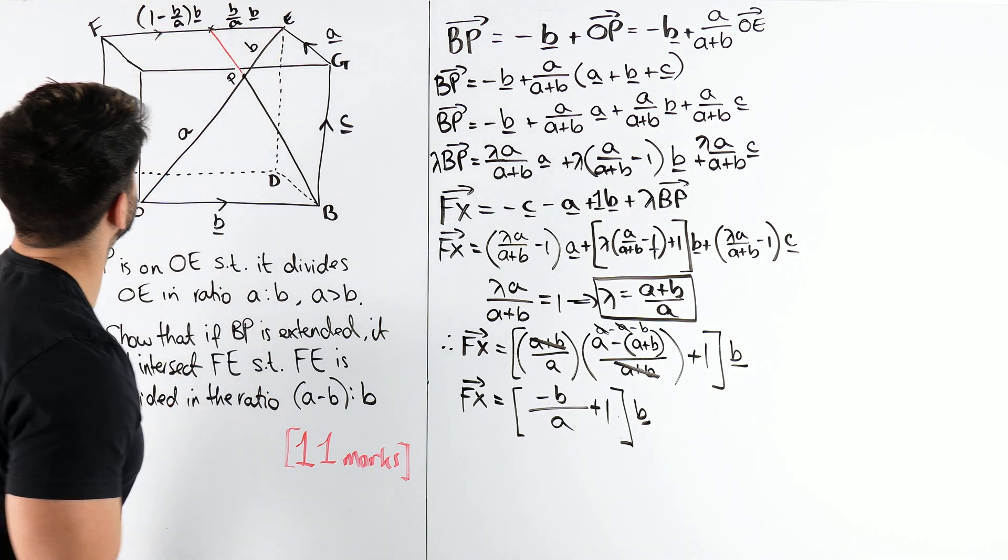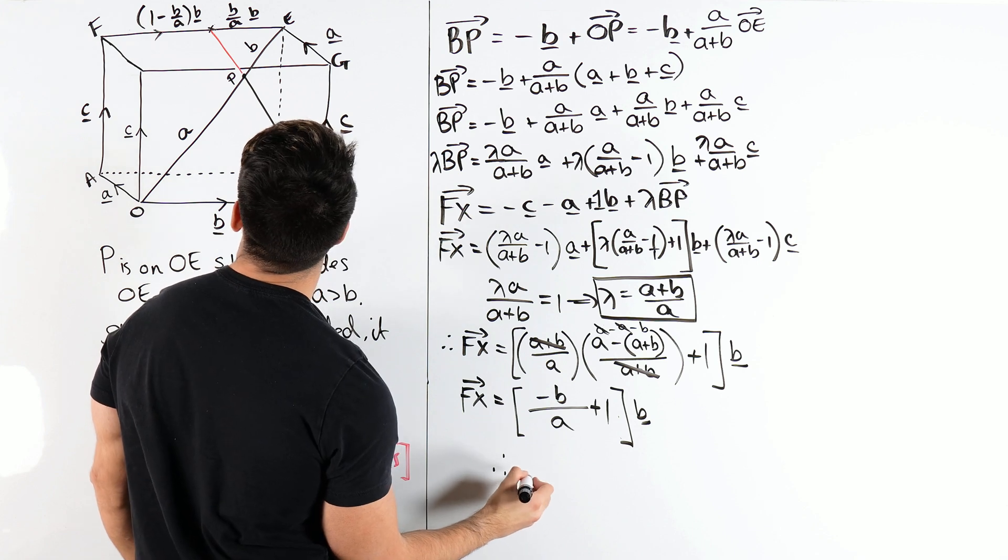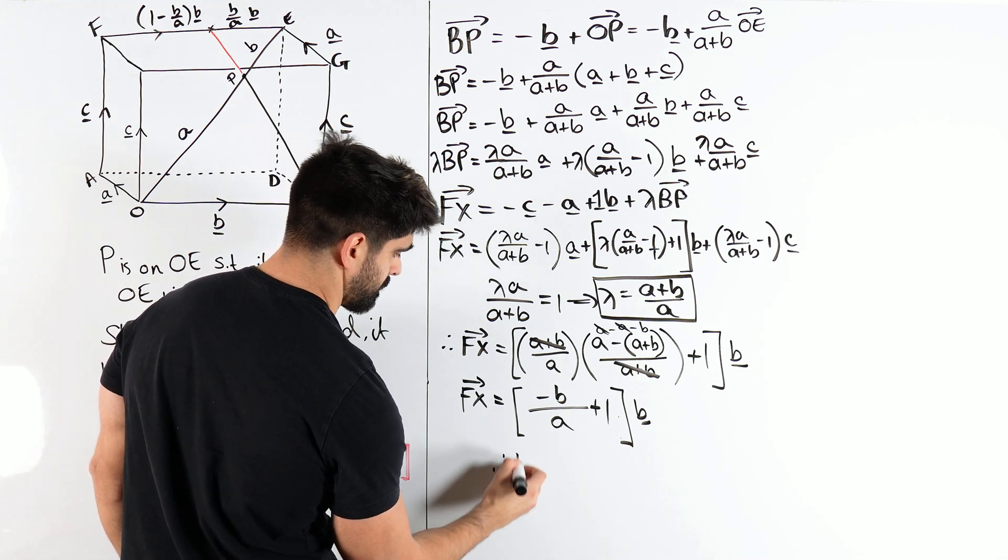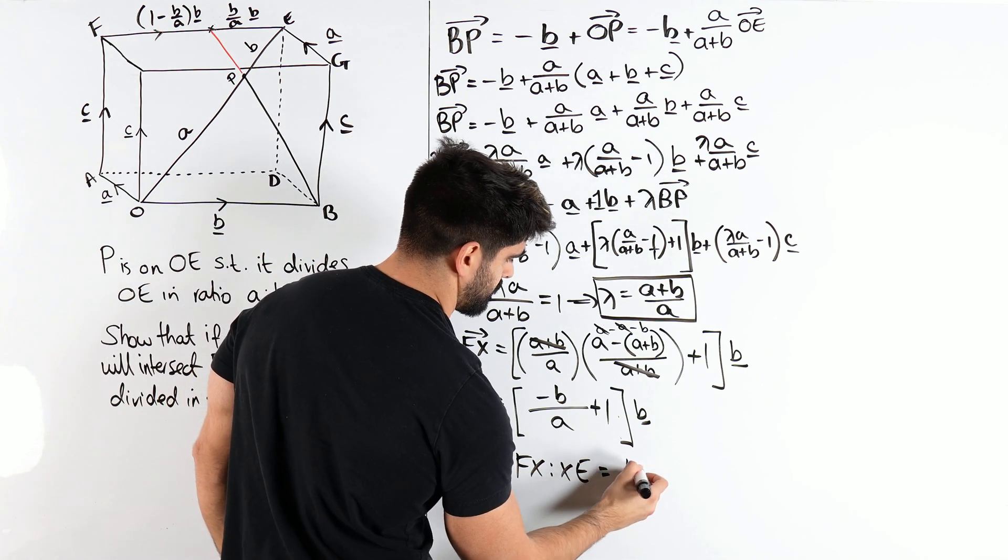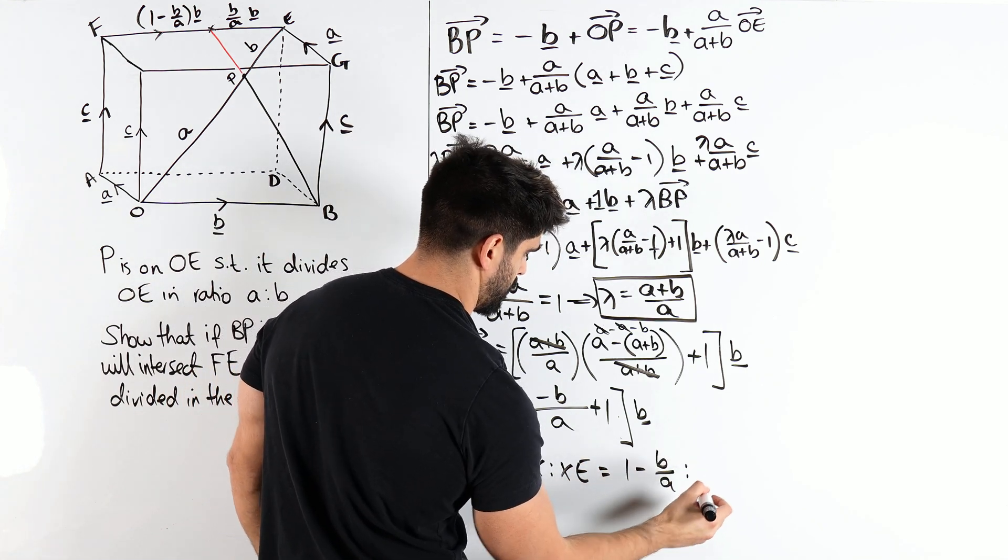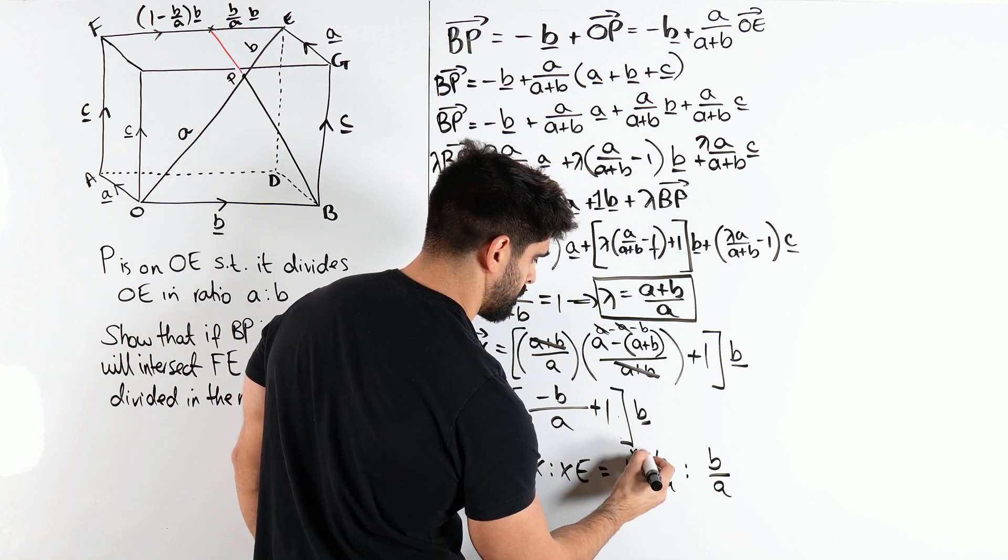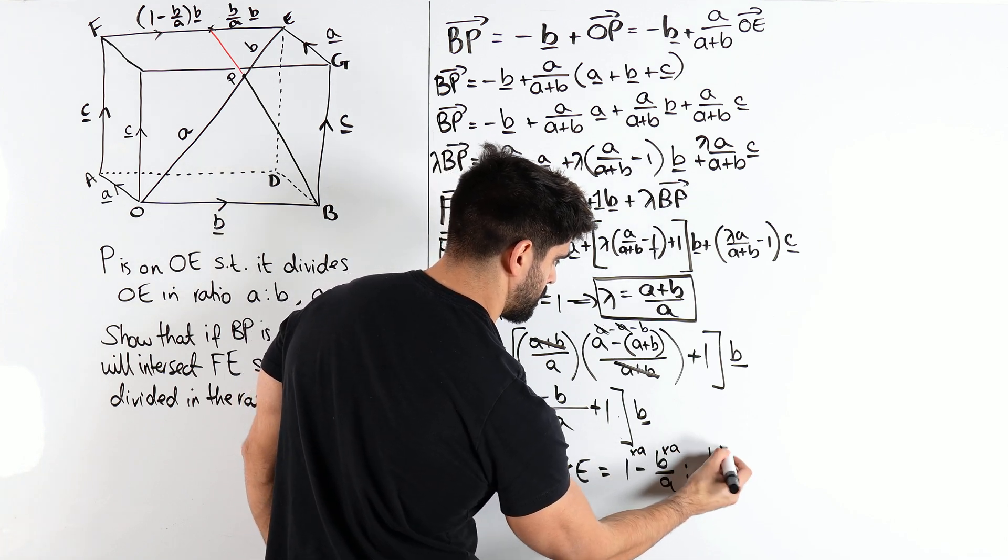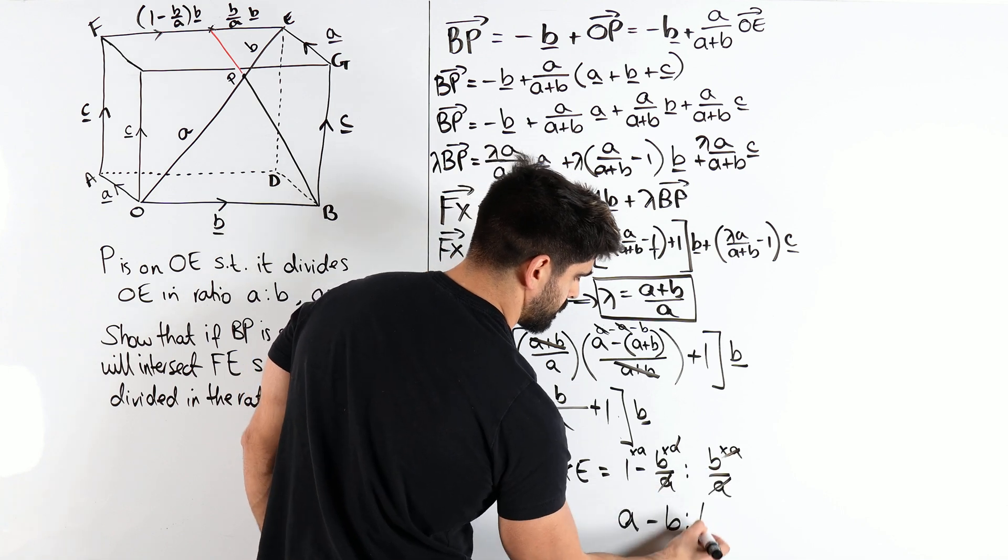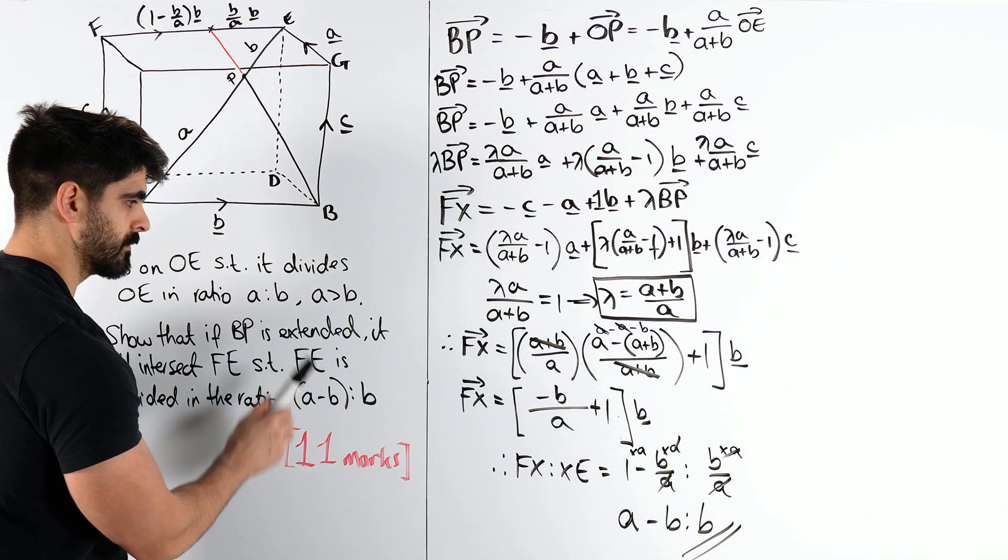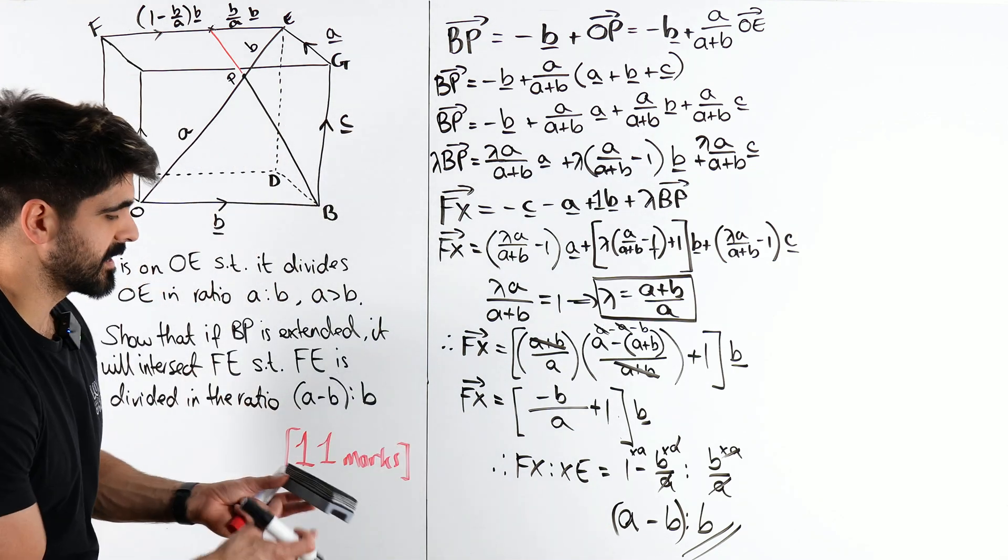And now we can write the ratio. The ratio will be 1 minus B over A. So, FX to XE is 1 minus B over A to B over A. Times everything through by A. 1 times A is A. Minus the A's cancel. And here we go. I just forgot my bracket, which you don't really need, I guess, but we ended up making it work. And that, guys, is our beautiful 11 mark question.